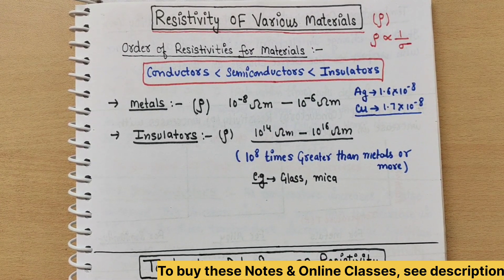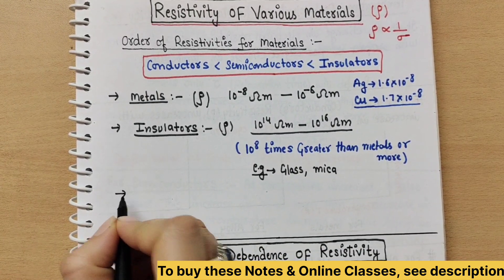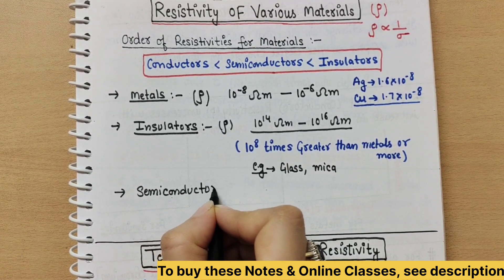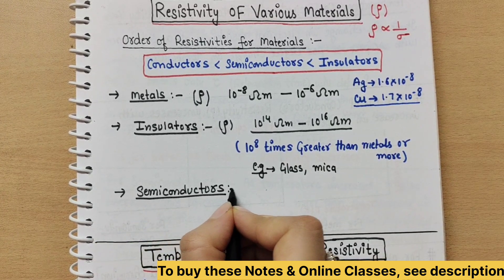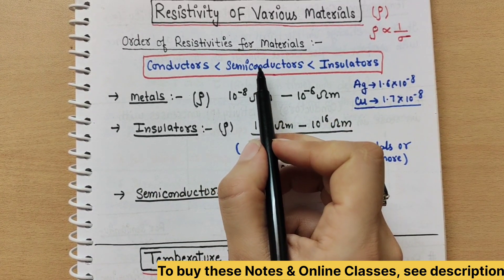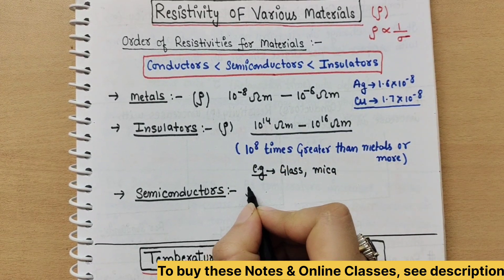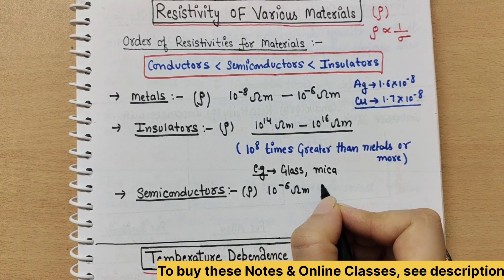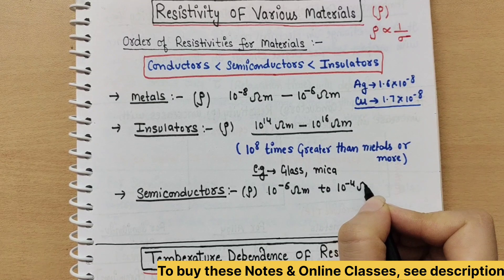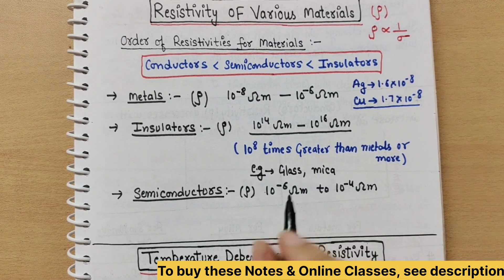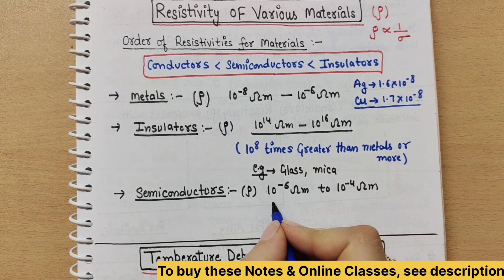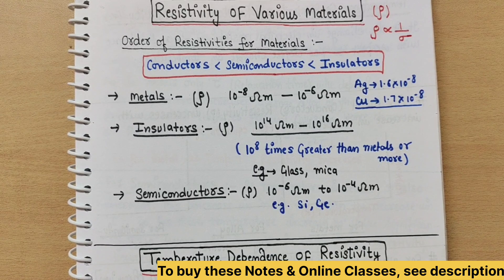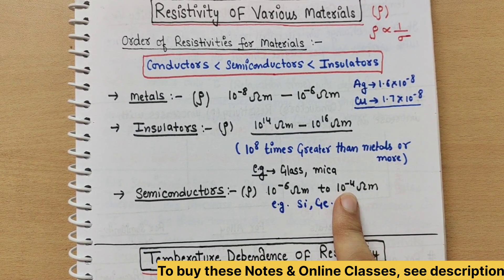Now what happens in semiconductors? The resistivity of semiconductors falls between that of metals and insulators. It ranges from 10 raised to the power minus 6 ohm meter to 10 raised to the power minus 4 ohm meter. Examples of semiconductors include silicon and germanium.